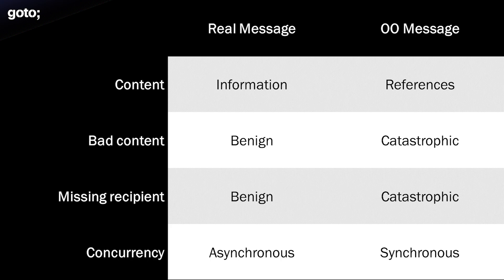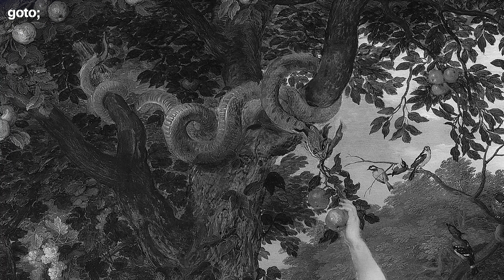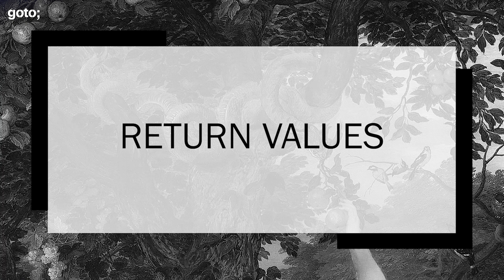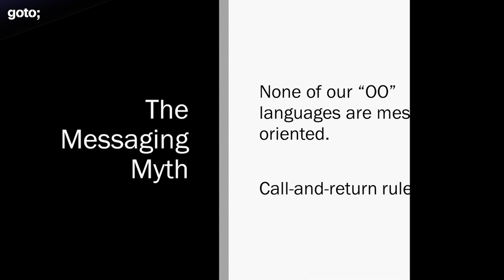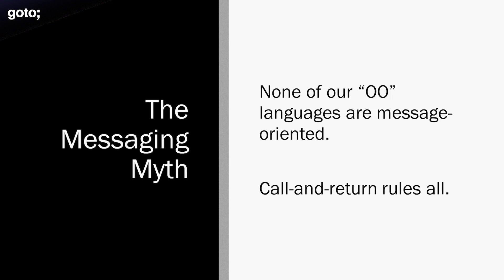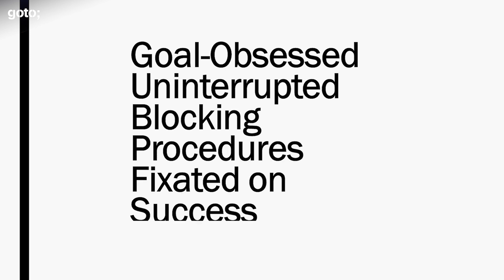There is a cognitive dissonance here between the metaphors we use and the actual semantics of our languages. A lot of people will tell you that the original big mistake of object-oriented programming was having mutable state. I disagree. I believe that the original sin of OO was return values. Return values are a fundamental denial of the messaging paradigm. And even Kay said that Smalltalk never quite arrived at the vision that he and his team had set for it. The later languages it inspired haven't done any better. So here is the big lie of object-oriented programming for the last 40 years: we keep saying we're sending messages, but we're really not. It's really the same call and return semantics we inherited from the procedural era. Procedures are goal-obsessed, uninterrupted, blocking operations fixated on success. A way to say this in a single word is that they are transactional.